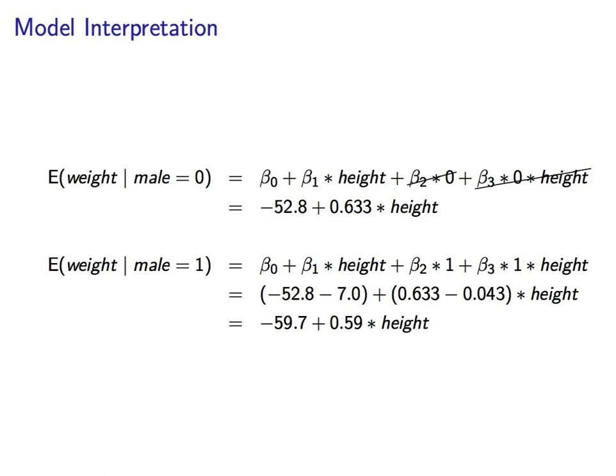So the expected weight for females, in other words, when male is equal to 0, that's our dummy variable, is represented by this first equation. Because male is 0, beta 2 and beta 3 are going to cancel out. And we are left with negative 52.8 plus 0.633 times height. The expected weight for males, in other words, when male is equal to 1, so weight given male equal to 1, is represented by this second equation.